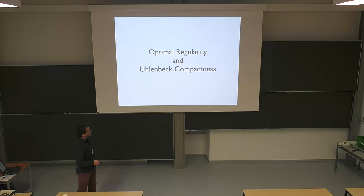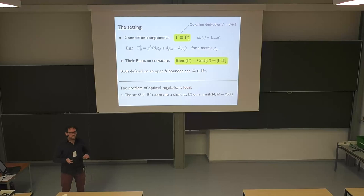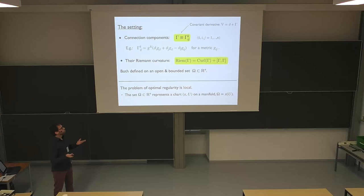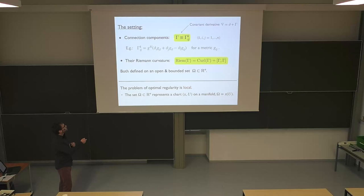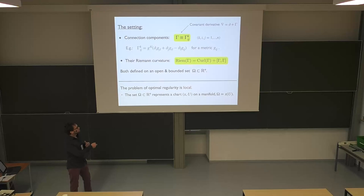Our setting is very local and explicit. By 'connection,' I always mean the connection coefficients — the collection of coefficient functions. These could come from a metric tensor via the Christoffel formula, but they don't have to. We assume the connection is defined on an open and bounded set omega, a subset of R^n. We can introduce the Riemann curvature tensor by the standard formula, and we interpret omega as a coordinate patch — the image of a coordinate system on the manifold.